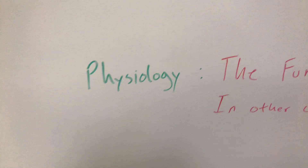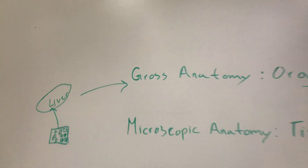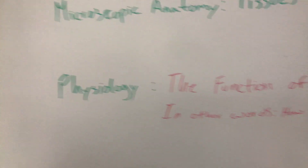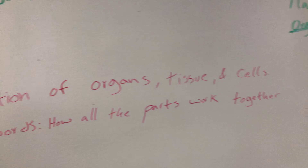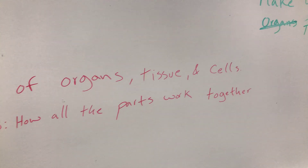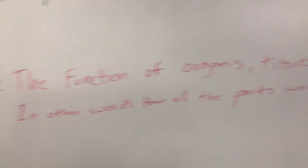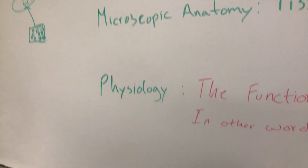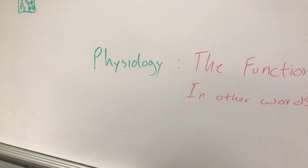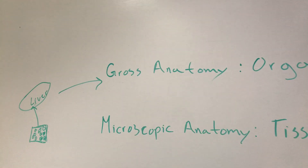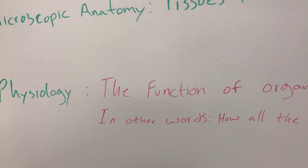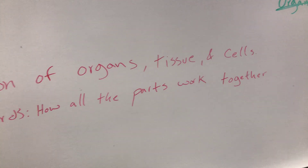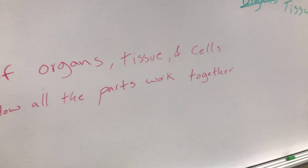Physiology — you always hear about anatomy and physiology. Physiology is the function of organs, tissues, and cells. It's pretty much how everything works together — how the anatomy works with each other, how all the parts work together.